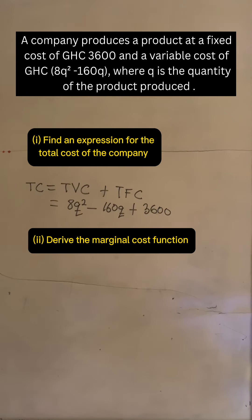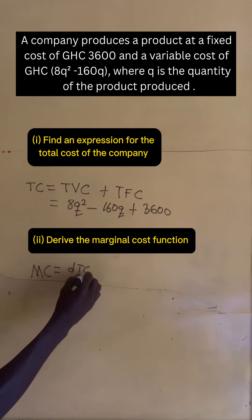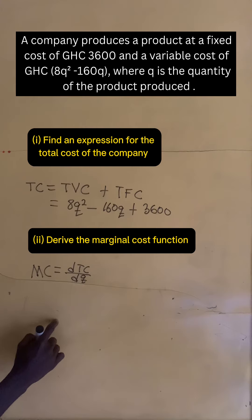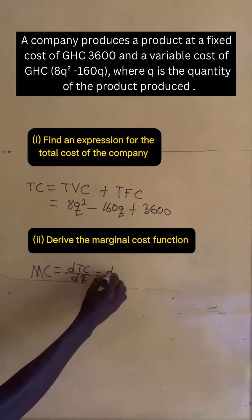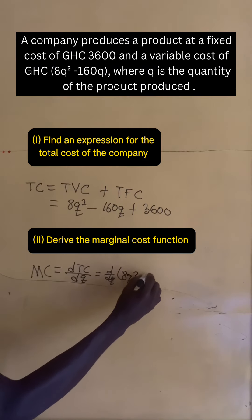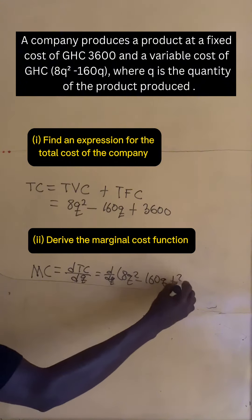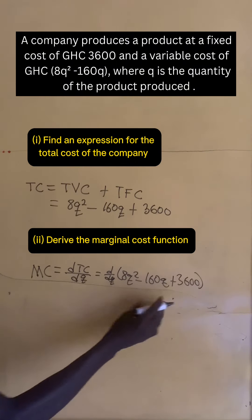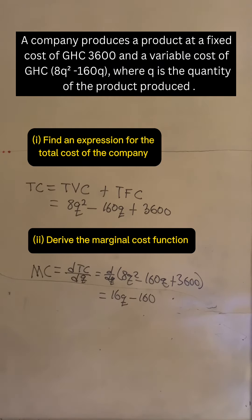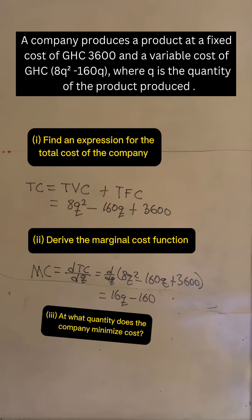Now we have to derive the marginal cost function. The marginal cost is simply the change in the total cost with respect to the quantity of the product produced. So we take d/dq of (8q² - 160q + 3,600). This simple differentiation gives 16q - 160. So at what quantity does the company minimize cost?